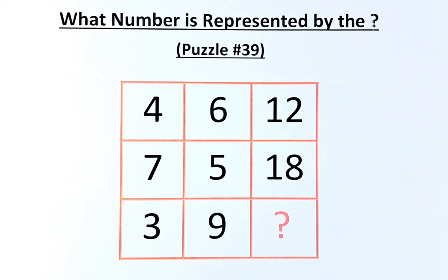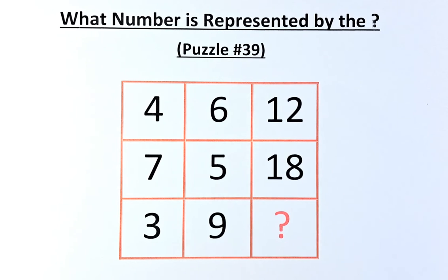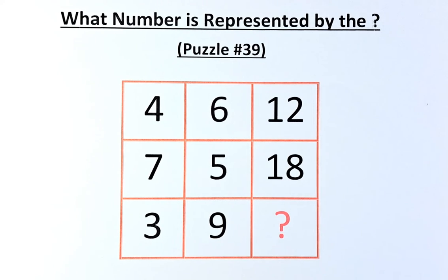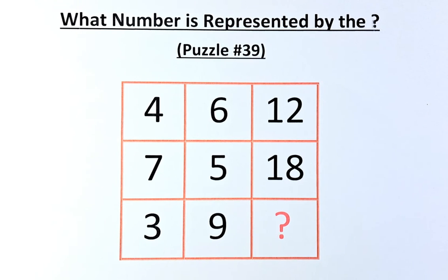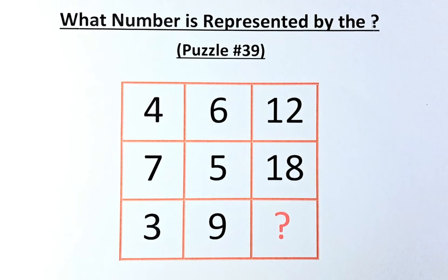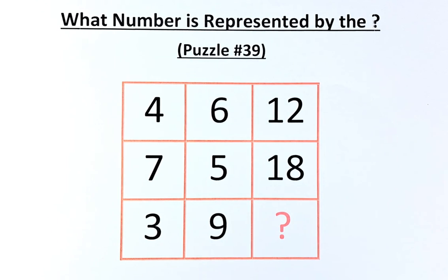Welcome back to the solution of puzzle number 39. What number is represented by the question mark? The numbers in the puzzles are 4, 6, 12 in the first row, 7, 5, 18 in the second row, and 3, 9 and the question mark in the final row. So have you found the answer?